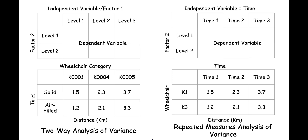When a study uses a repeated measures ANOVA, you know that the study collected the same outcome measure for each participant at multiple times. For example, they may have measured subjects before the intervention, immediately after the intervention, and three months after the intervention. A repeated measures ANOVA is just a two-way ANOVA where time is a within-subjects factor with multiple levels.